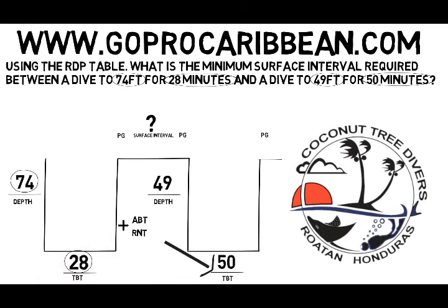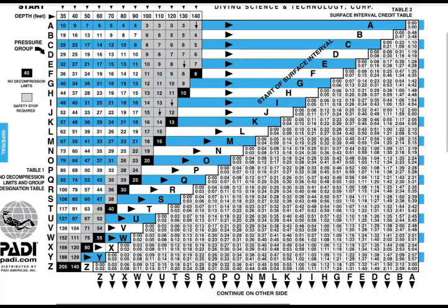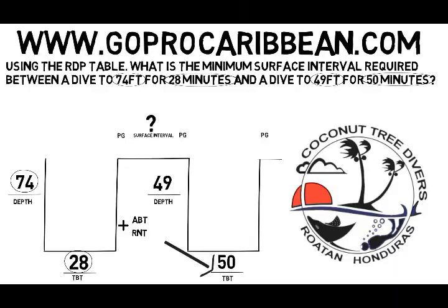Looking at the left of our diagram, we have the depth and time of 74 feet and 28 minutes, followed by a blank — we're trying to find a pressure group. 74 feet rounds up to 80 feet; that's one of the important things to always make sure you do. If you're not given a nice round number, you always round up. 80 feet for 28 minutes lands us in pressure group P at the end of the first dive.